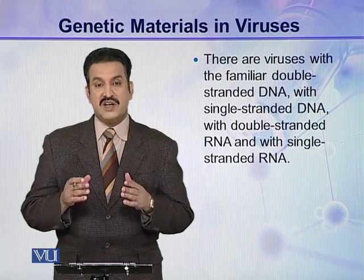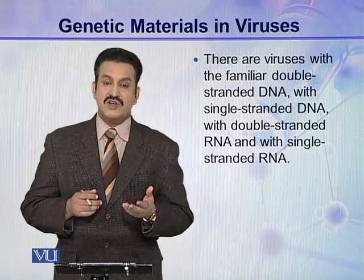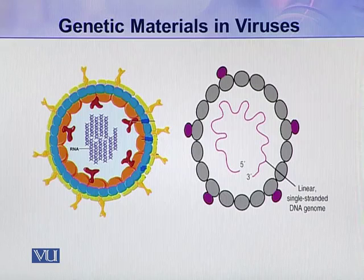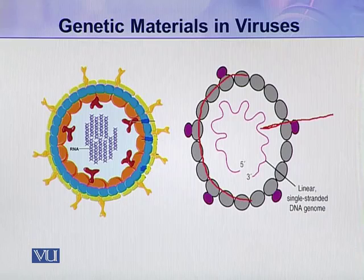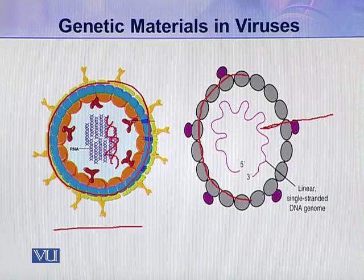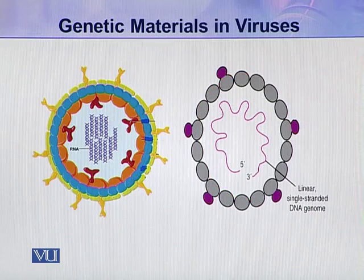Both RNA and DNA are present in viruses, and these may be single stranded or double stranded. For example, here you can see a virus with a protein coat enclosing a single stranded linear DNA molecule — this pink one. While in this other case, you can see a protein capsid enclosing many double stranded RNA molecules. Both these viruses are unusual because they contain single stranded DNA or double stranded RNA.